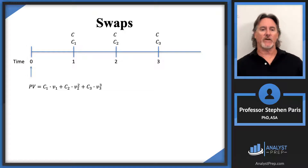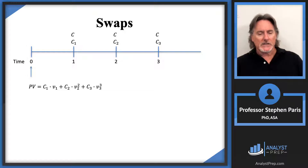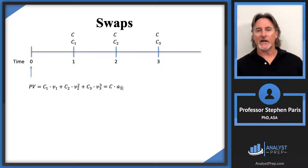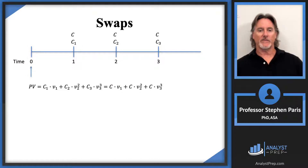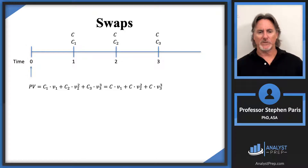I want to set that equal to the present value of the level set of payments. Students are often tempted to write the present value of that level set of payments as C times an annuity-certain angle three, and that would be correct in a flat yield curve context. But we're in the context of a term structure of interest rates, so I'm not assuming a flat yield curve. You shouldn't be using annuity notation — you're going to have to value each payment individually: the payment at time one multiplied by V₁, at time two by V₂ squared, at time three by V₃ cubed.